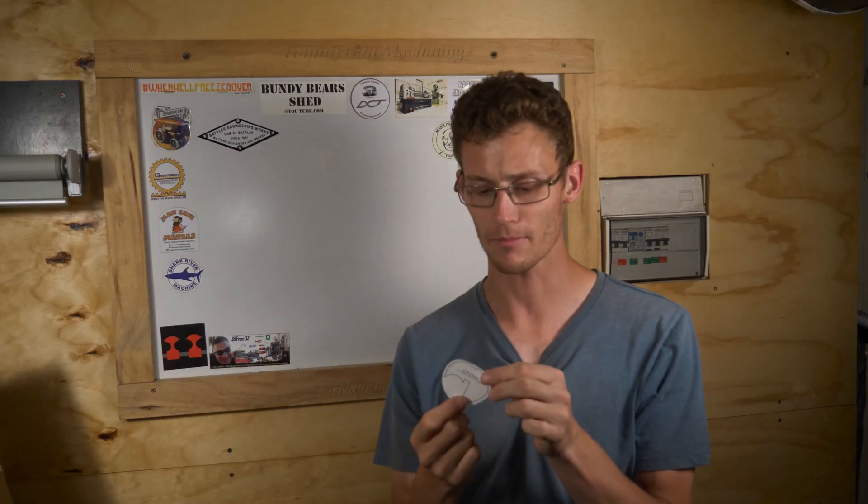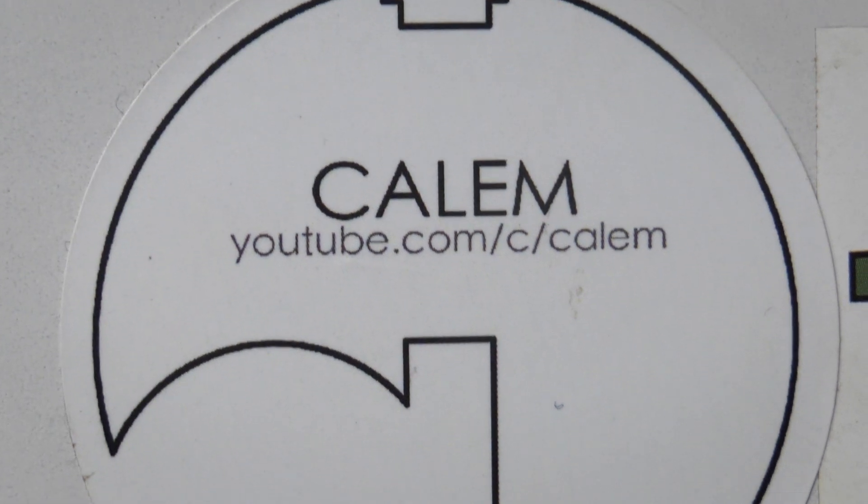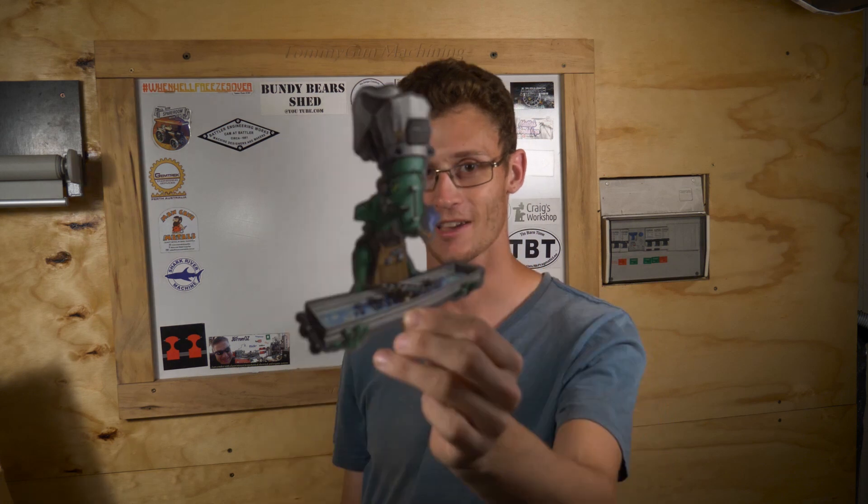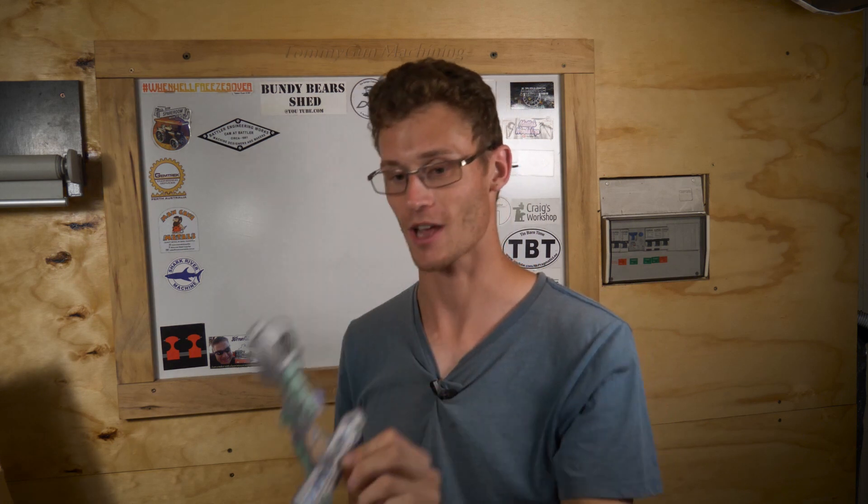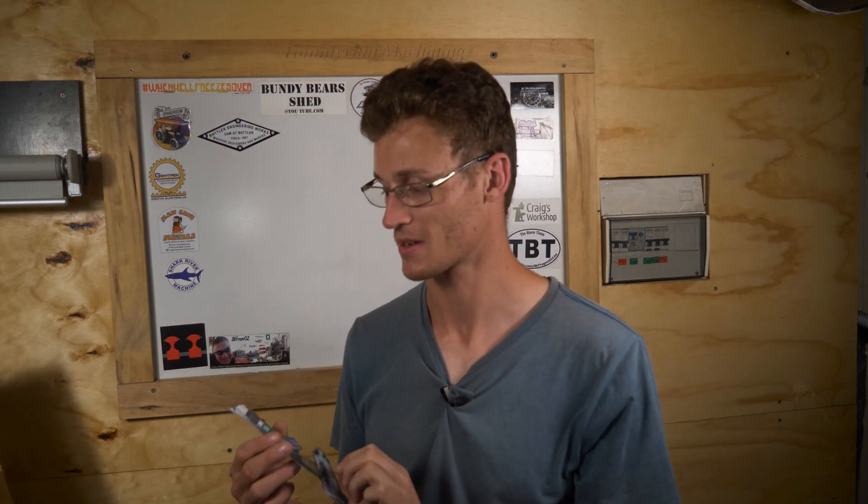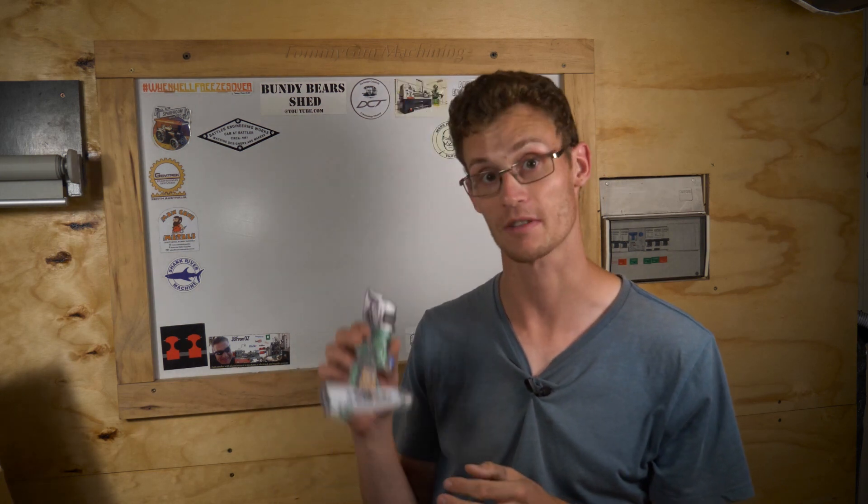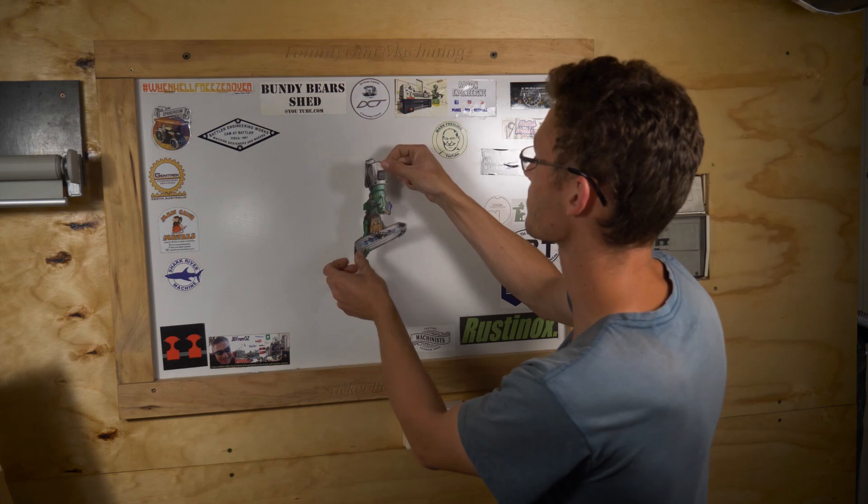We also have a sticker from Vietnam. I'm not sure how you say this exactly, but I believe it's pronounced ice cream. Calam's got two stickers. He's got the round one, and then he's got this masterpiece. Calam is an absolute artist and does some really amazing builds and machining work, and I'd seriously recommend giving his channel a look. This one will go in the center.